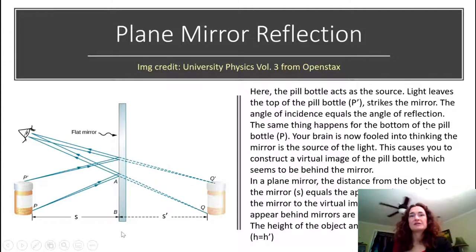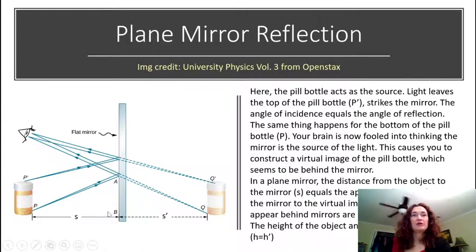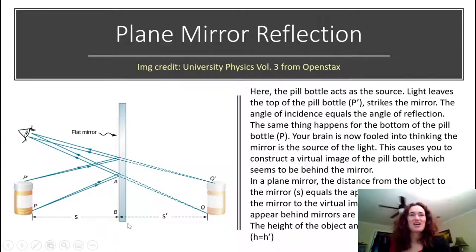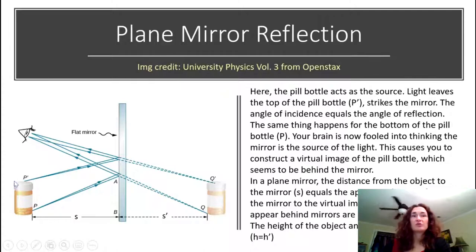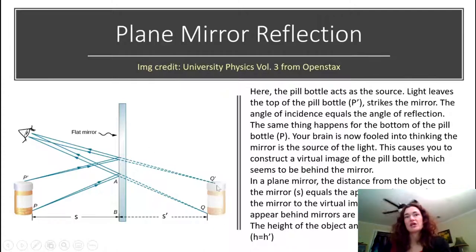For plain mirrors, the true distance of the pill bottle to the mirror, S, is going to be the same as the apparent distance of the image from the mirror's surface, S'. Also, in a plain mirror, the height of the object will not change — the true height H will equal the apparent height of the image H'.